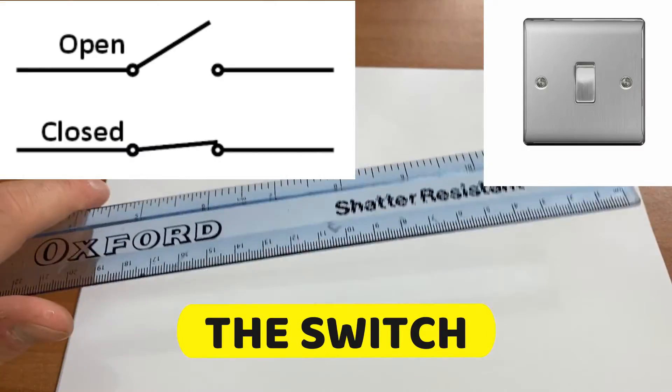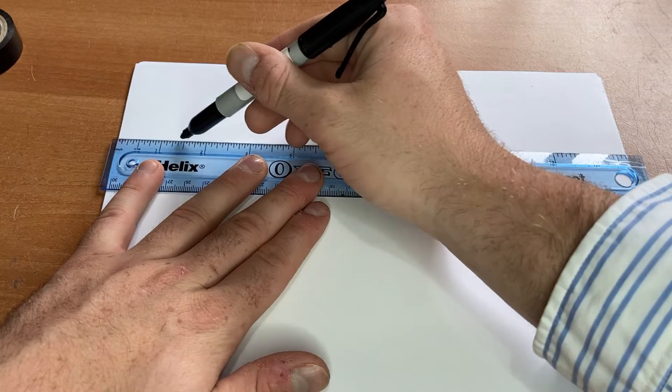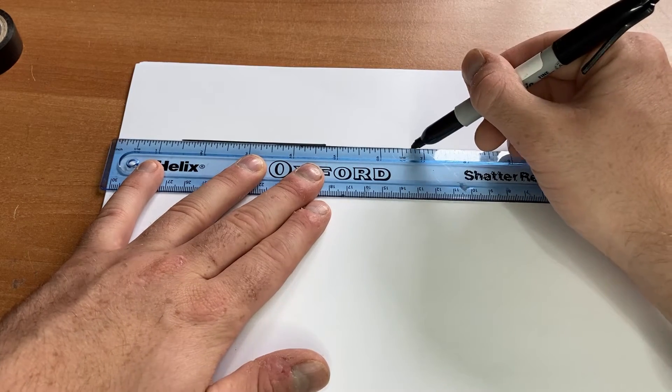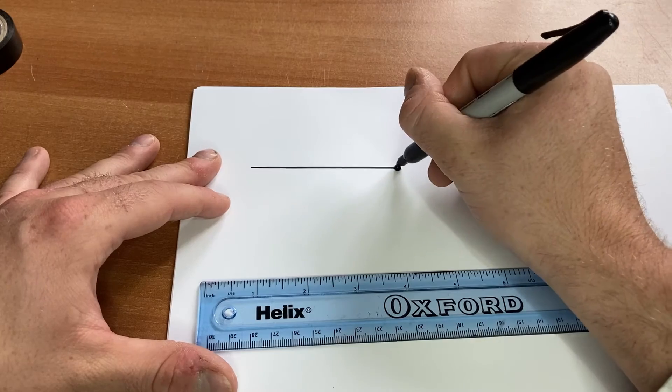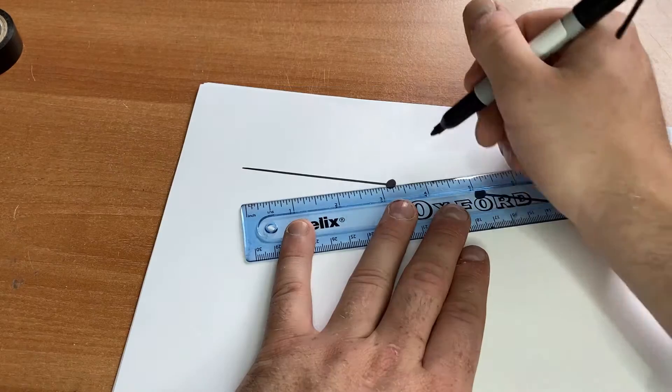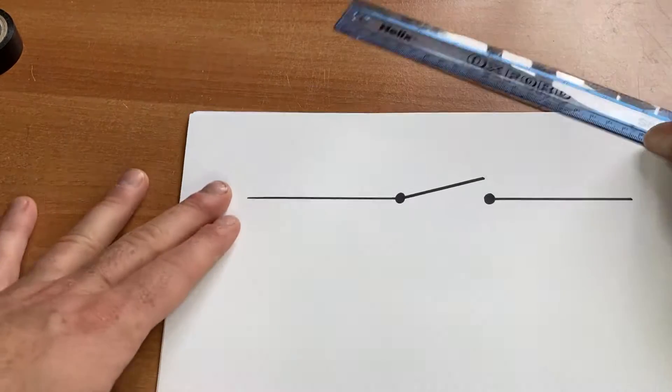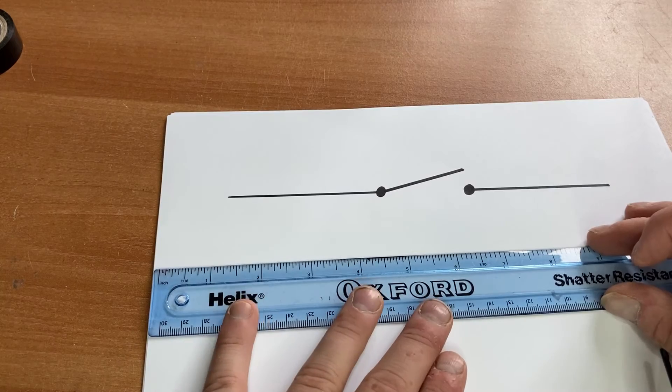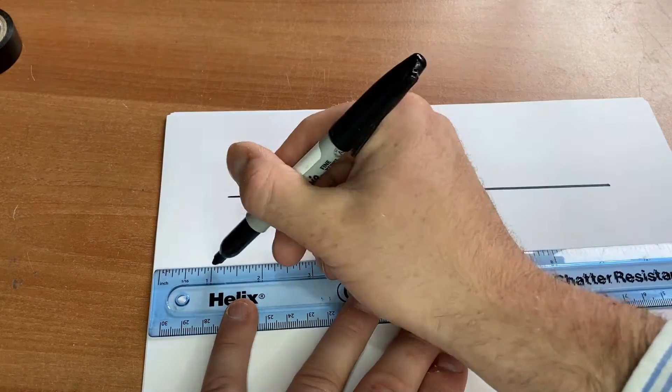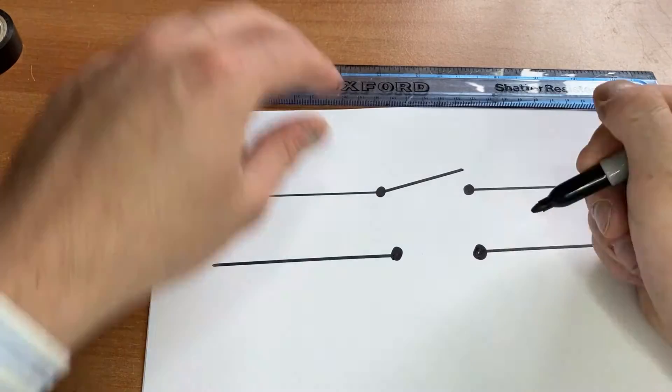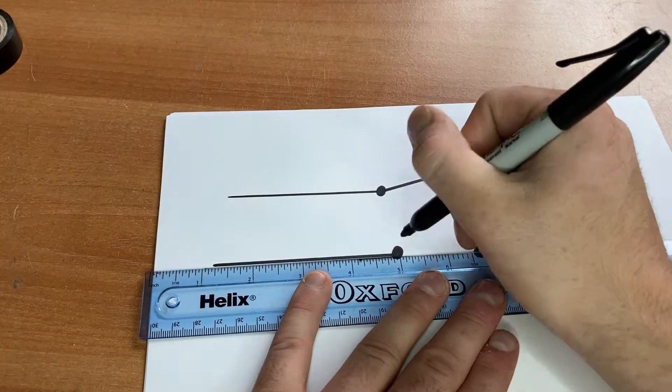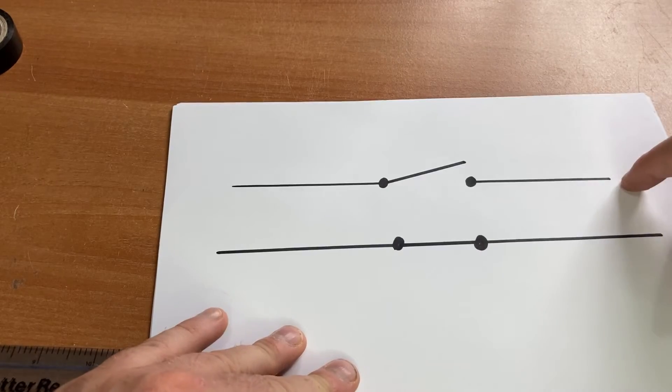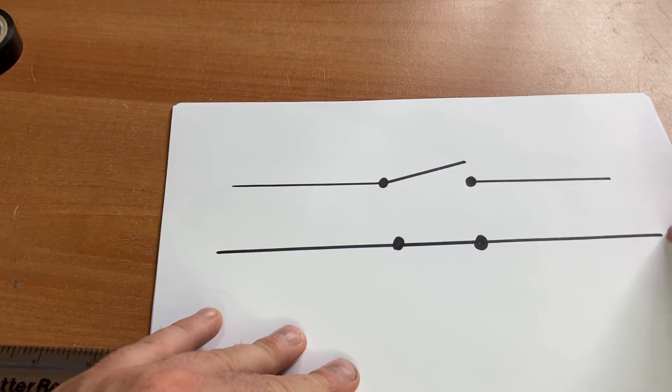Next up we've got the switch. There's two ways to do the switch. Draw my wire here and then leave a gap and draw my other wire. Put a dot here and here. Now if the switch is open I draw it like this. See, they're not touching. There is a gap in the circuit. But my switch can also be closed. And if my switch is closed there should be no gap. So here is how I draw a switch when it's open. This is how I draw a switch when it's closed.